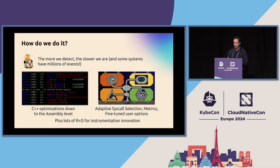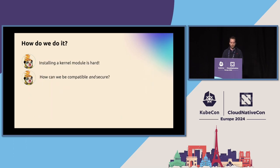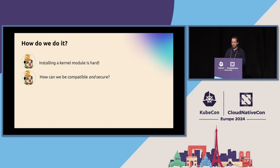We also optimize — since day one, Falco was optimized at the system call level, pretty much at the assembly level. We don't write assembly because it supports four architectures, but we try to be smart with our C++ — not architecturally smart, but optimization smart. And installing a kernel module is a hard thing to do. We have compatibility with x86, ARM, s390x, and we can support more architectures.